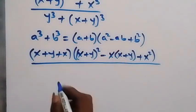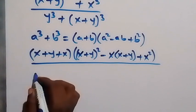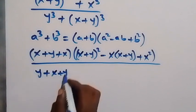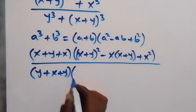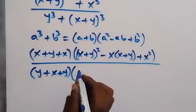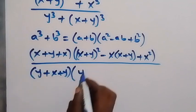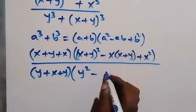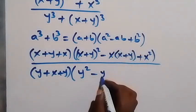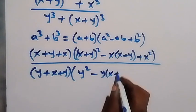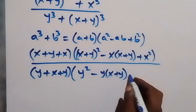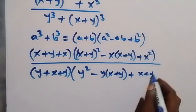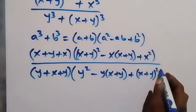For the denominator, y serves as a and (x plus y) serves as b. So we have y plus (x plus y) — that's in the form of a plus b — then into the bracket: a squared, that's y squared, minus ab which is y times (x plus y), then plus (x plus y) squared.